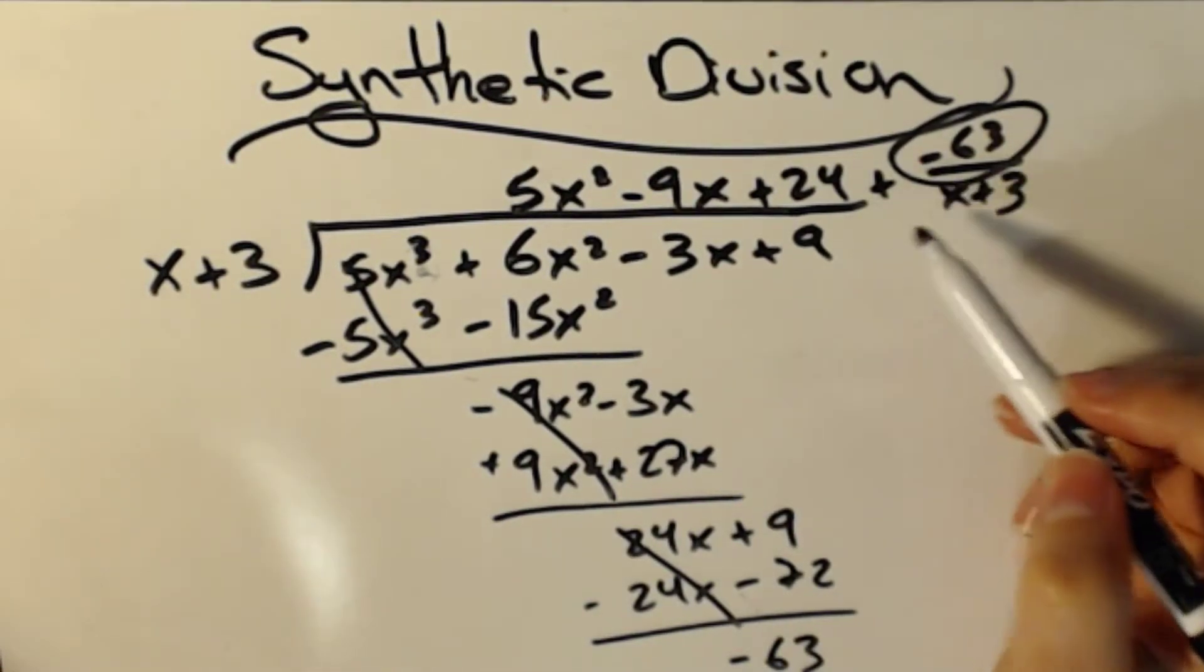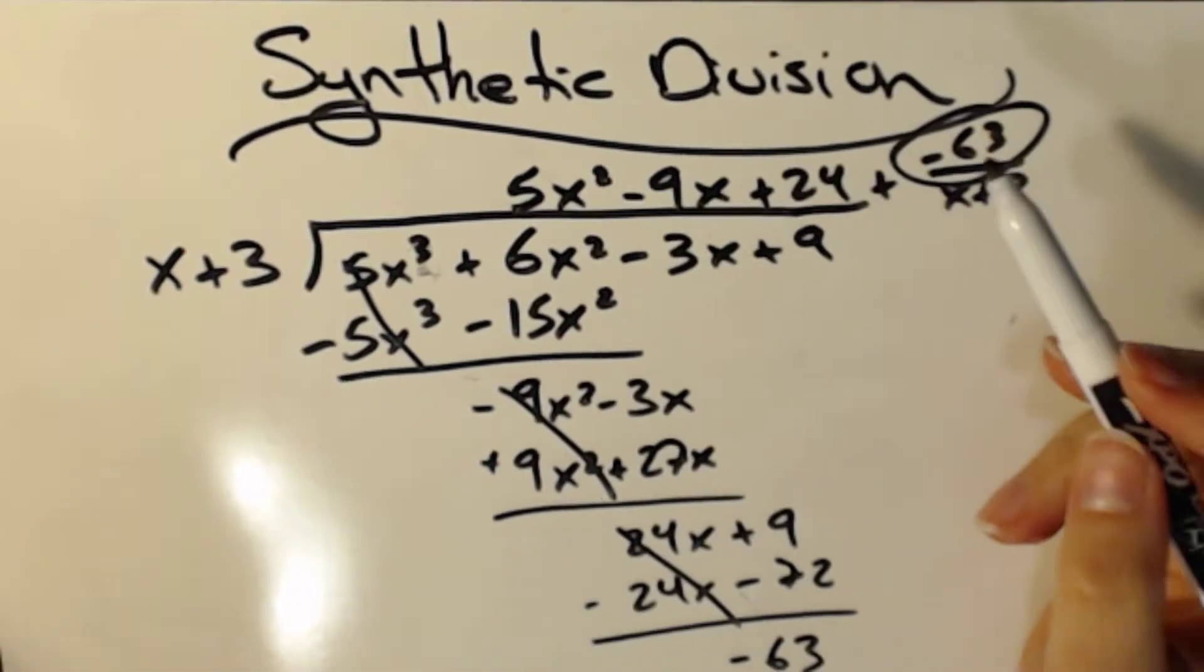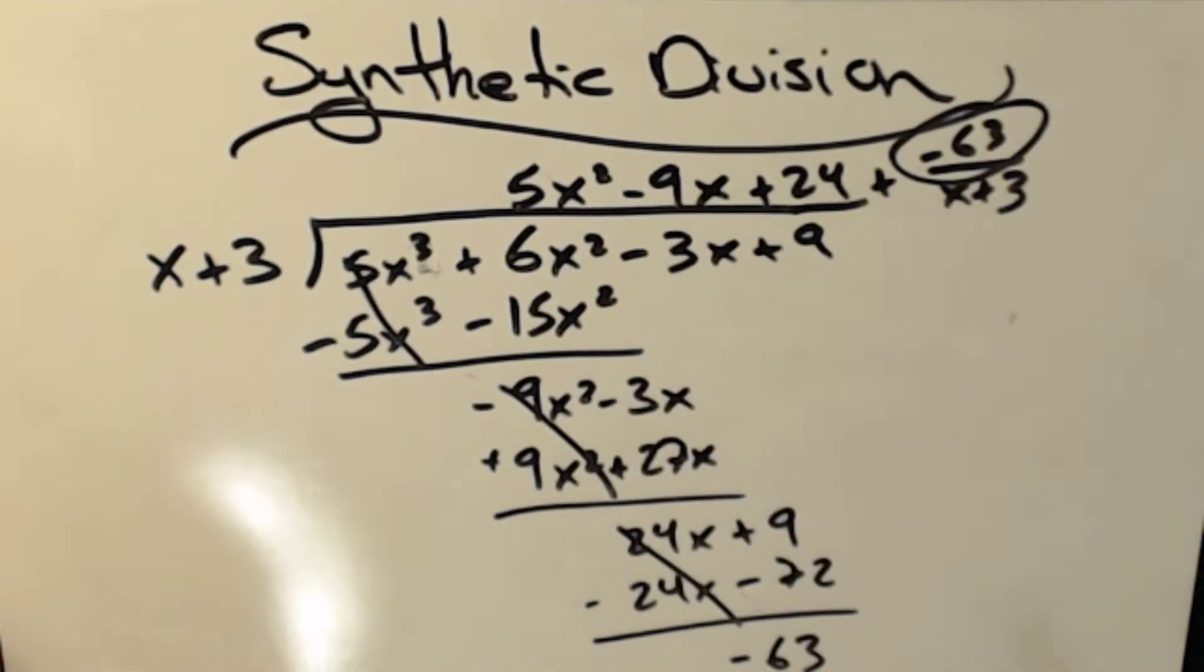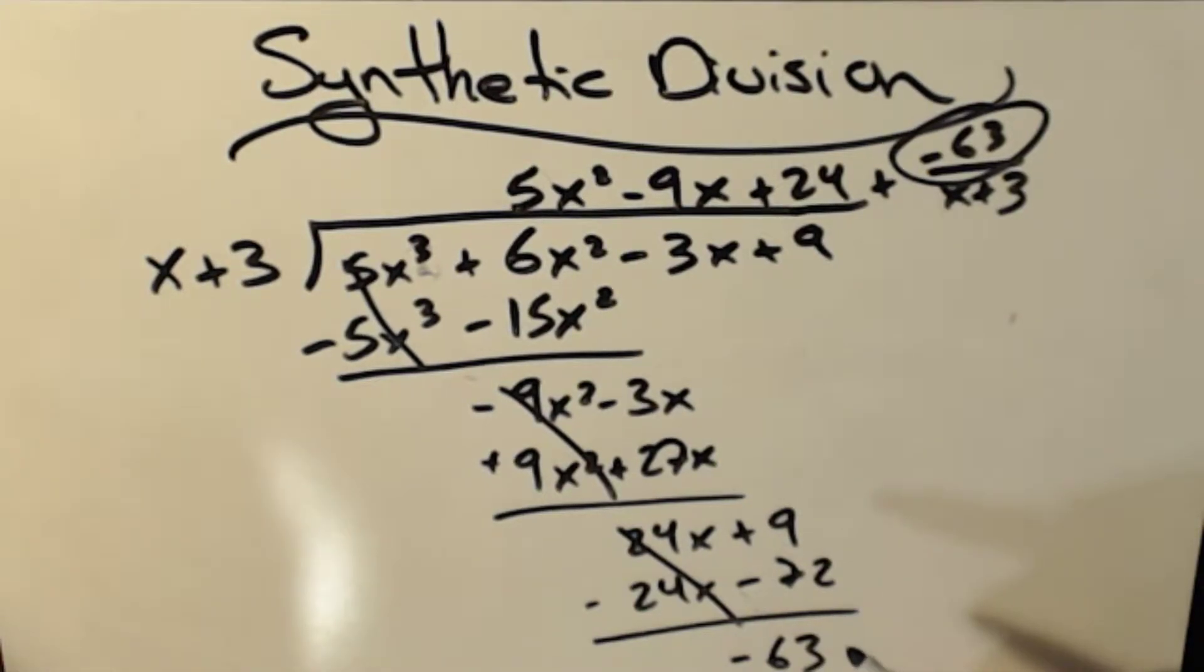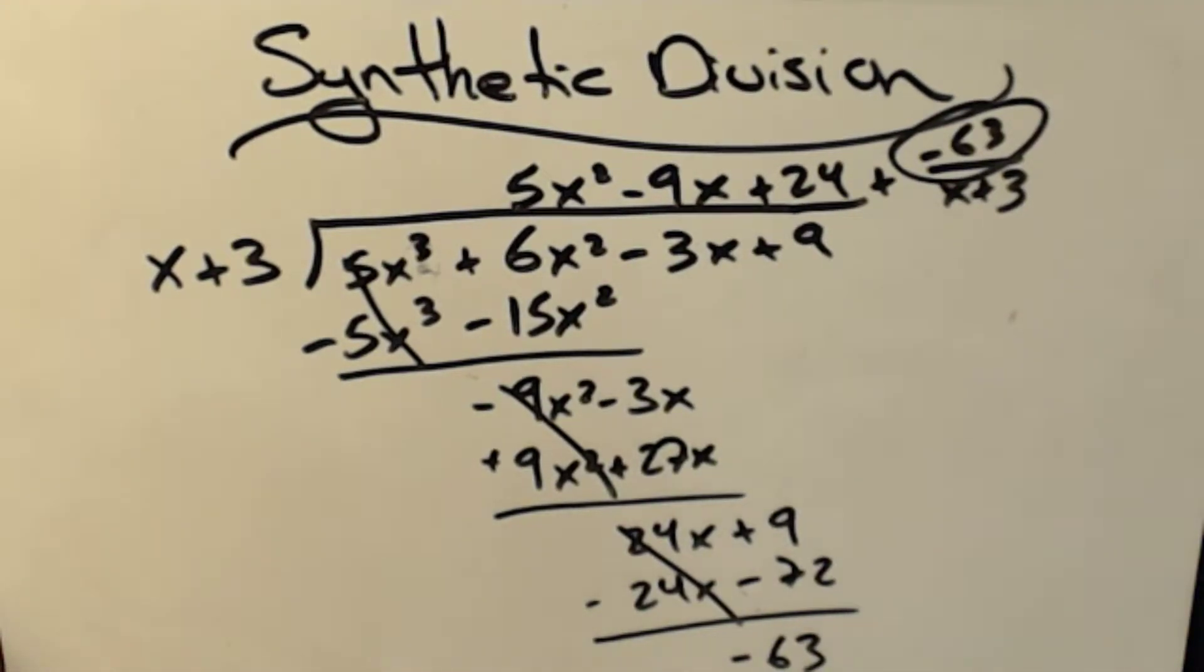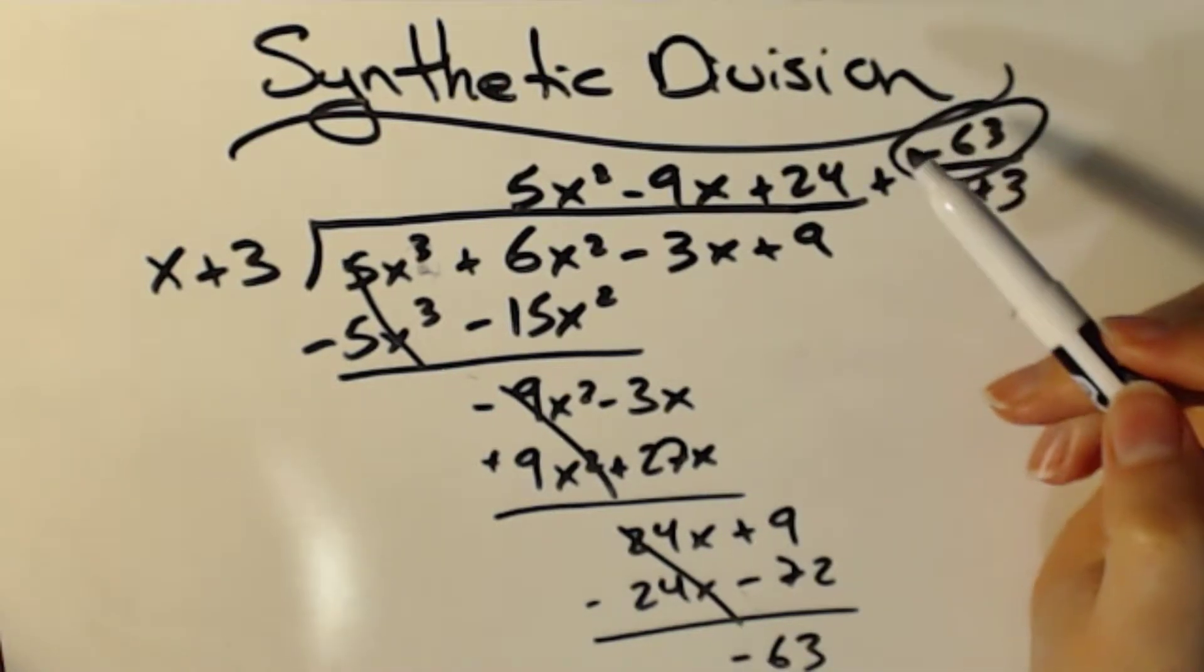But in order to get that remainder, we're going to have to do a lot of division. And this long division stuff, while relatively straightforward in that it's just long division, is a little bit tedious, as you might have noticed. So what I'm going to teach you today is how to do the same process with something called synthetic division, hence the title.